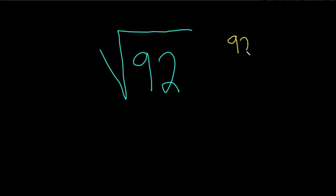you want to think of what is the largest factor of 92 such that when you take a square root of that factor you get a whole number? In other words, what's the largest factor that's a perfect square?